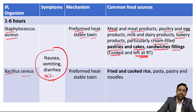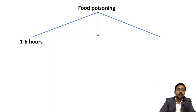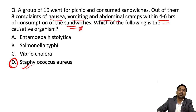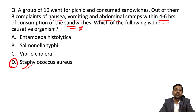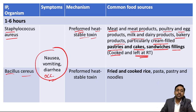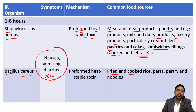In the question, the food mentioned is sandwiches, so the answer is confirmed: the causative organism is Staphylococcus aureus. If instead of sandwiches they had mentioned fried rice, then for the same symptoms and same incubation duration, the diagnosis would change from Staphylococcus aureus to Bacillus cereus.